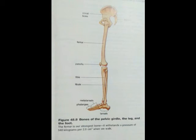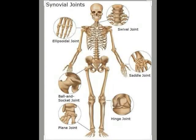The hind limb bones are: Upper leg — Femur; Lower leg — Tibia and Fibula; Ankle — Tarsals; Foot — Metatarsals; Toes — Phalanges; Knee cap — Patella. Two bones are present in the collar region, two bones are present in the shoulder, and two bones are present in the hip region as pelvic girdle bones.